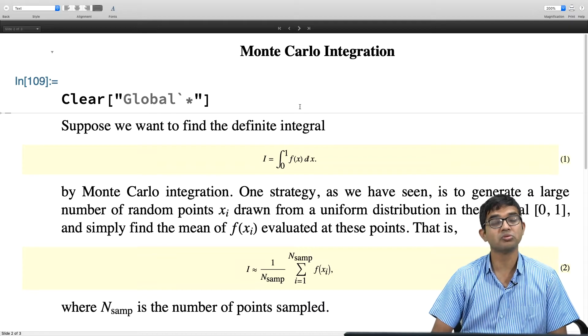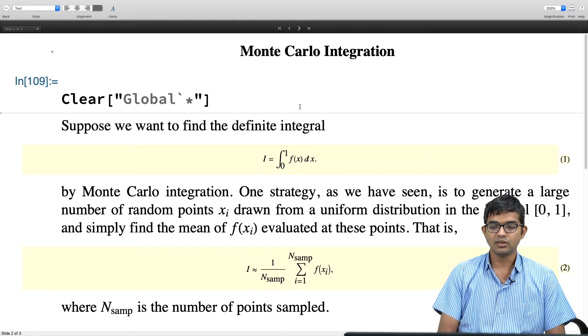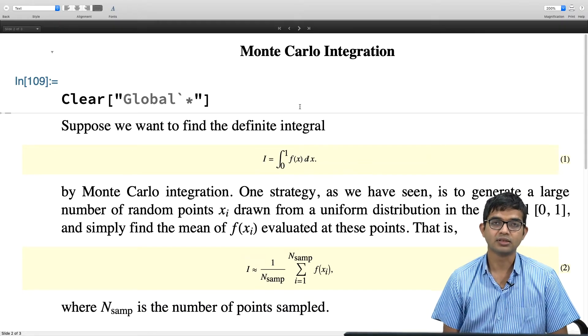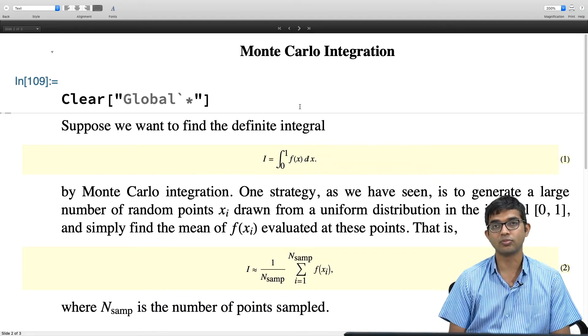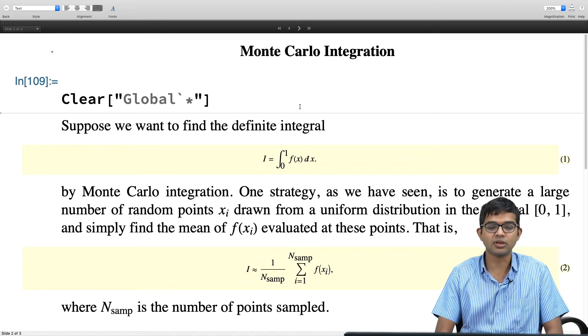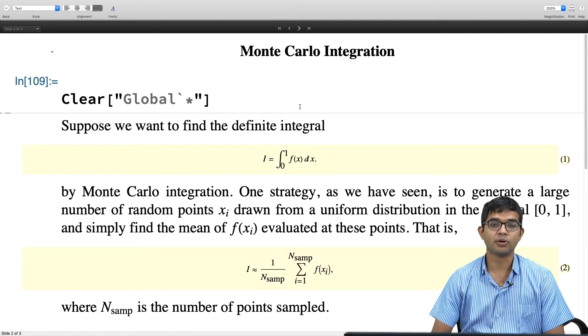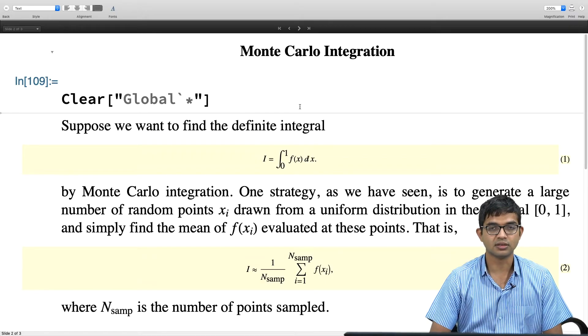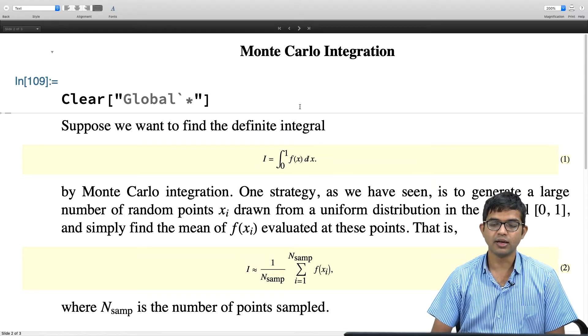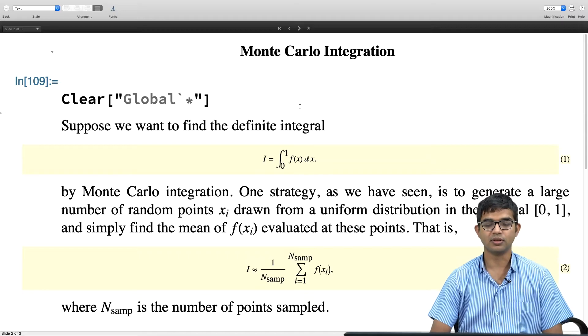I have this integral from 0 to 1 of some function f(x) dx. One strategy is to simply take n_samp points randomly between 0 and 1 drawn from a uniform distribution, and then evaluate f(x_i). You can look up some textbook on probability or statistical methods, stochastic processes, where proofs of this would be described.